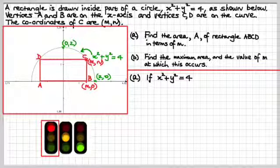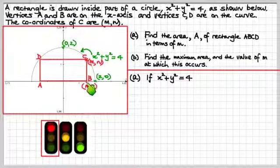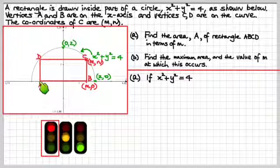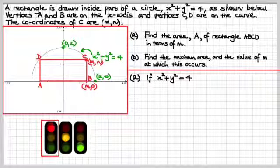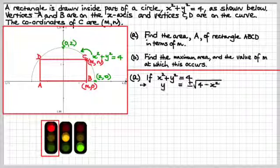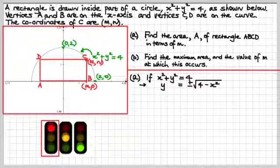If x squared plus y squared equals 4, my objective here is to get y in terms of x, because I want the height, and I want to multiply that by the width to get the area of this rectangle ABCD. Therefore, solving for y, we get plus or minus the square root of 4 minus x squared.